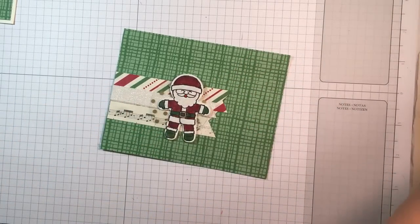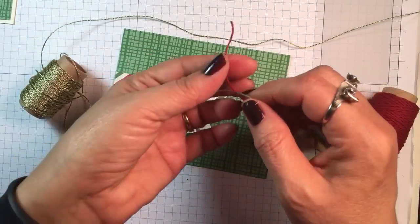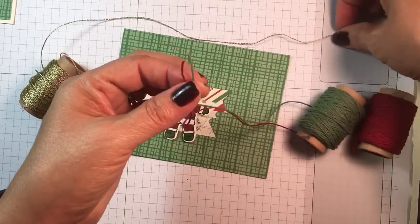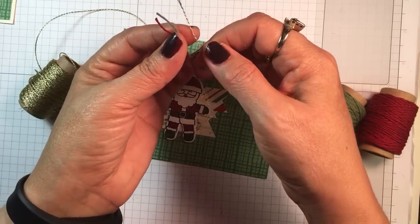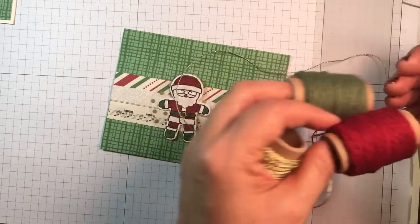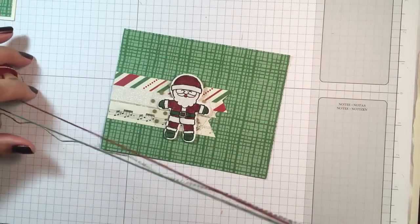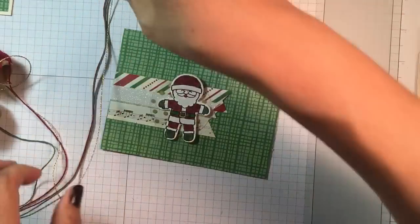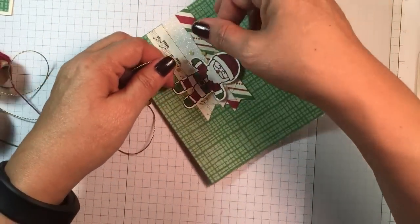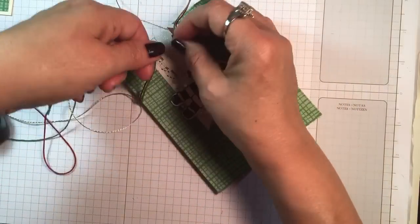Now we're gonna bring in the colors a little more as well as the gold metallic that's on that fancy acetate. I'm going to take all three strands of this twine trio - it's cherry cobbler, garden green, and the metallic gold. I'm going to try to leave it on my spools as I tie it around this top layer.